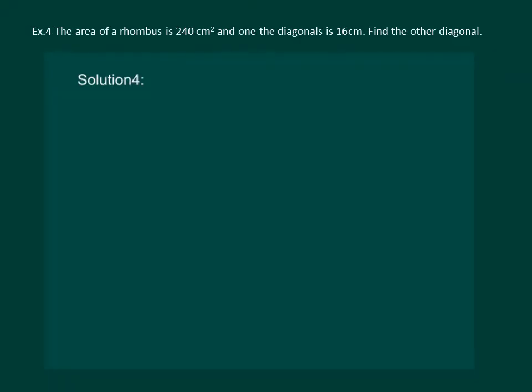Let us read the question. The area of a rhombus is 240 cm² and one of the diagonals is 16 cm. Find the other diagonal.